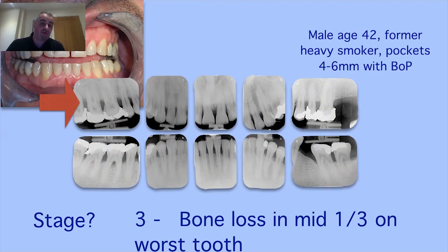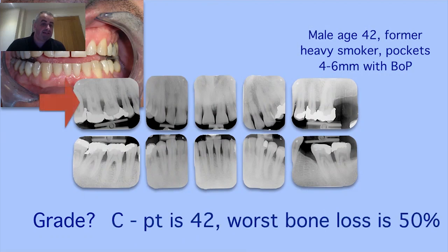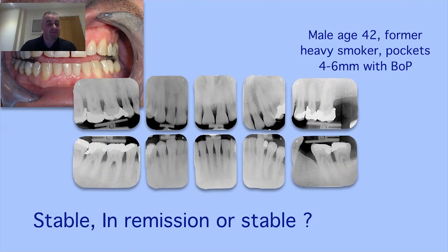Next question: what stage is it? We need to find the worst-affected site. Many people look at the lower right first molar due to furcation involvement, but that isn't the greatest bone loss. Looking at the upper right second molar, bone loss is roughly in the mid-third — so this is stage 3. Stage 2 is coronal third, stage 3 is mid-third, stage 4 is apical third. Find the worst tooth and apply the rule.